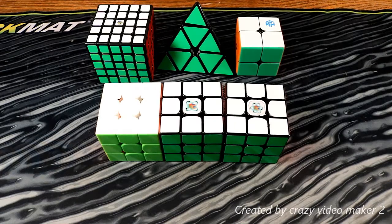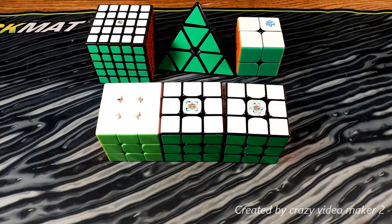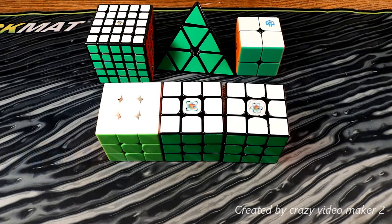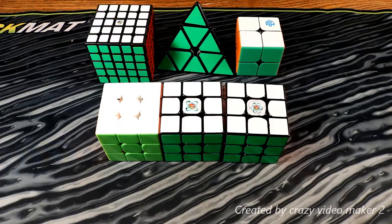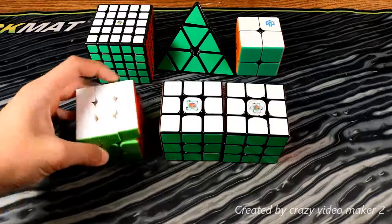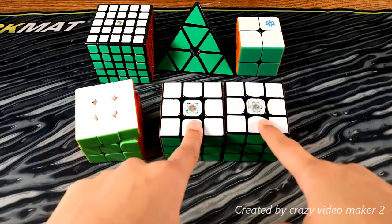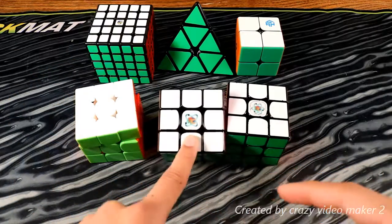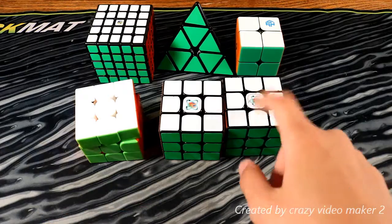I'm doing is 3x3. I have three cubes here - this is my secondary cube. I'm not sure which one I'll be using, either a GTS2 M Light or the WuQue M, most likely this one.